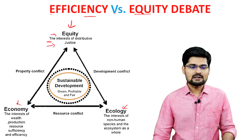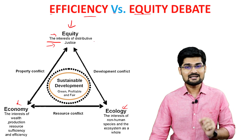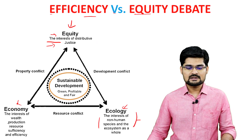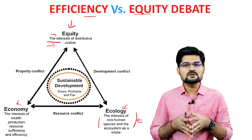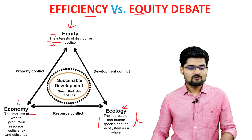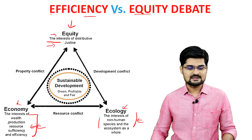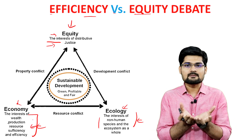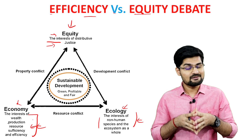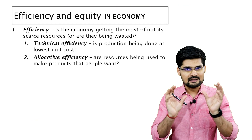Equity ensures the interests of distributive justice and fairness. In terms of ecology, it's important that we talk about the ecological principle where human and nature interaction is balanced. In terms of economy, we talk about wealth of nations, sufficiency and efficiency. When all these three things are put together, we derive the concept of sustainable regional development. Efficiency and equity in economy — remember efficiency here is defined in two ways.